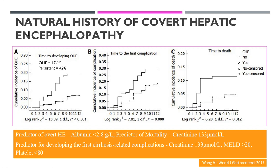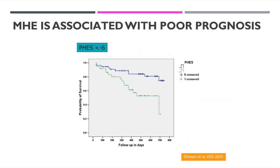Our study further demonstrated that survival is also affected — linked to the cognitive performance of patients. A psychometric test score of less than minus six was associated with higher mortality.